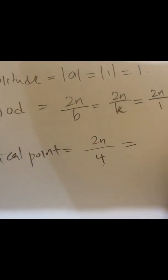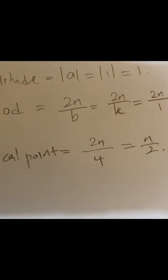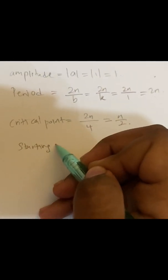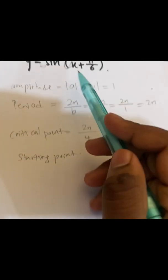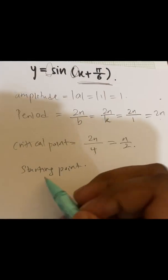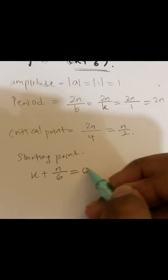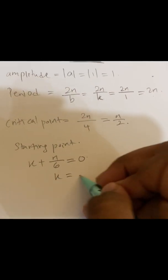So you can find the starting point now. Starting point is, you take this thingy, x plus π over 6 equals to 0. So the starting point is negative π over 6.